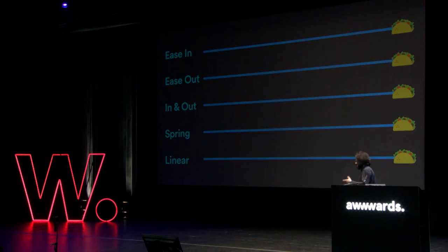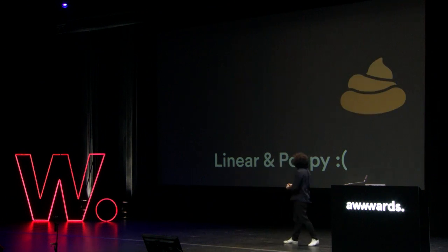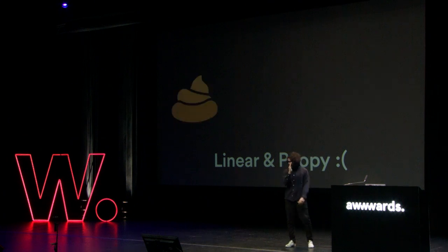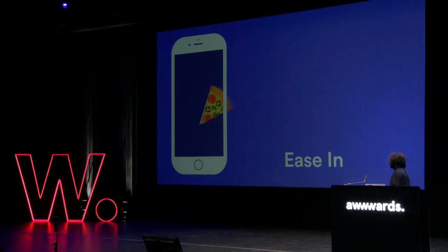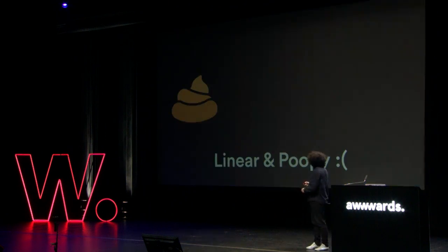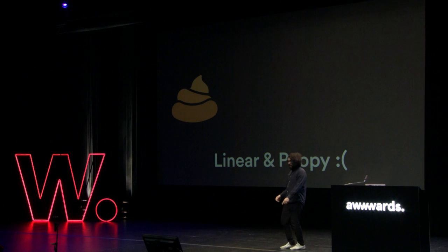Linear animation is kind of mechanical — it doesn't feel natural, it feels like a robot moving. Avoid it unless you really need it, like for looping elements that rotate at a constant speed or scrolling backgrounds where you never see the element enter or exit. Ease in starts slower at the beginning, like me starting to walk — useful when an element is exiting the screen, so you don't need to ease out at the end since the user can't see it. Ease out is the opposite — an element gracefully enters the screen and falls into place.